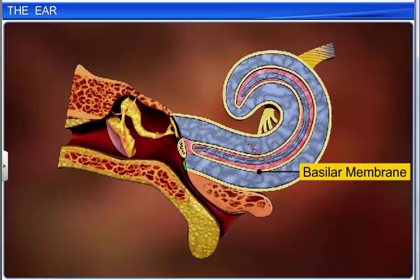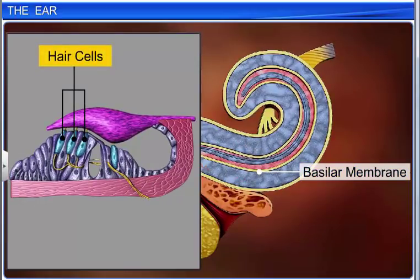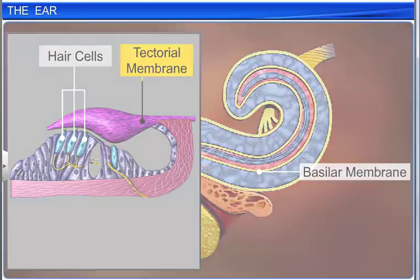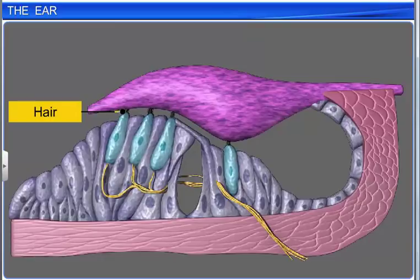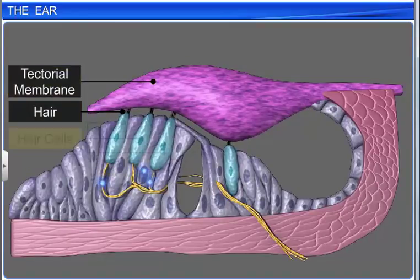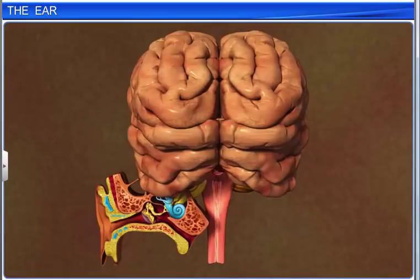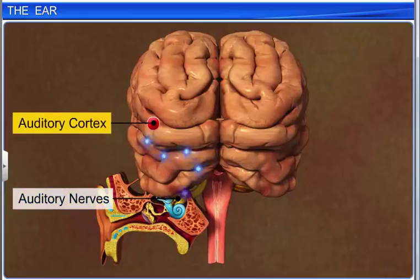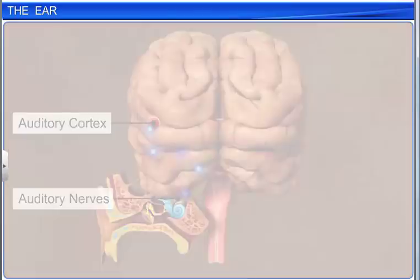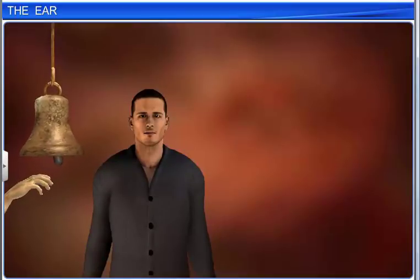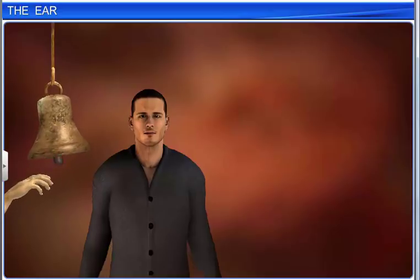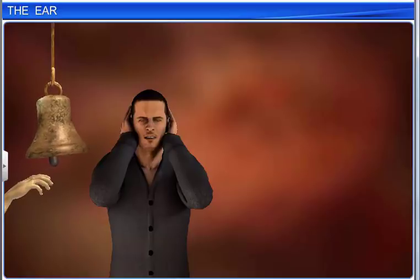The vibrations of the basilar membrane then bend the hair cells, pressing them against the tectorial membrane. The hairs move back and forth against the tectorial membrane, which stimulates the hair cells or receptor cells. As a result, the hair cells generate nerve impulses, which are transmitted along afferent nerve fibers and auditory nerves to the auditory cortex of the brain. The brain then interprets these nerve impulses and sound is recognized. In this manner, the ear forms an important part of the auditory system, and also helps us maintain our balance.